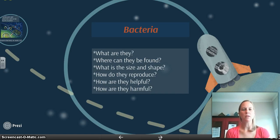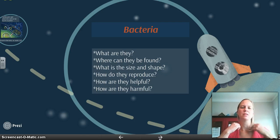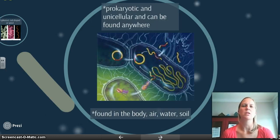So have your notes out and be ready to take some information down on the different types of pathogens. The first one we're going to start off with is bacteria. These are the questions you should be able to answer when we finish this: What are they? Where can they be found? What are their sizes and shapes? How do they reproduce? Are they helpful or harmful? Make sure you're able to answer those as we get through the presentation.